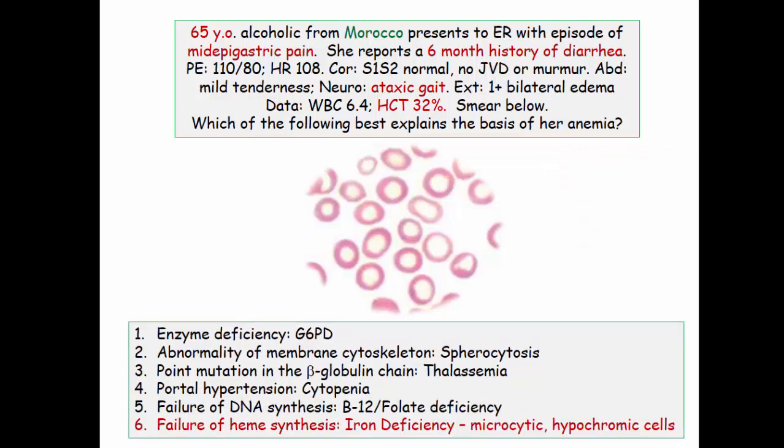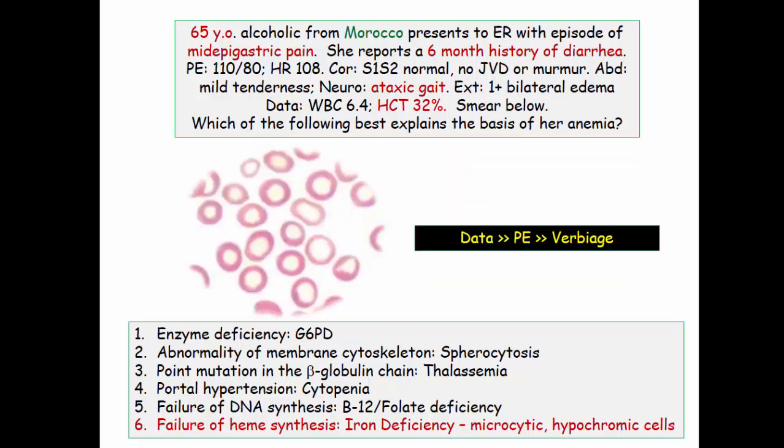The answer is choice six: iron deficiency. Iron deficiency is expressed as a failure to synthesize heme; the globin chains are fine. As for the vignette's details about alcohol and Morocco — all tomfoolery. Data trumps all else. Vitamin E was a great theory, but it wasn't an option, and vitamin E causes hemolysis, not hypochromic cells. You're dead in the water if you did not appreciate this smear.